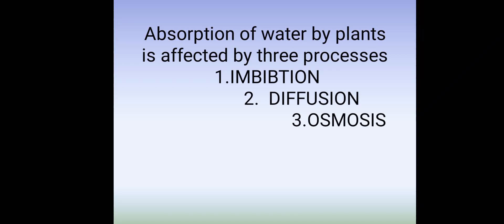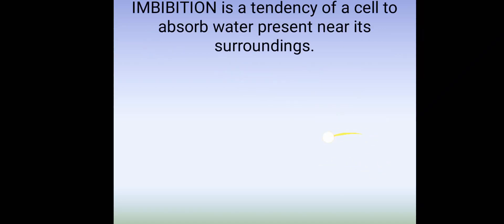First is imbibition. Imbibition is a tendency of a cell to absorb water present near its surroundings. To understand this process, we can try an experiment at home. Take a dry gram seed in a container and put water into the container containing the gram seed.